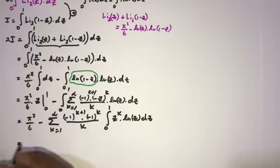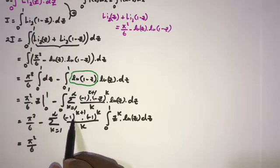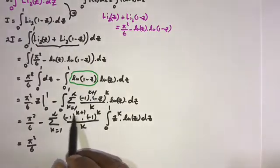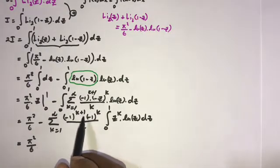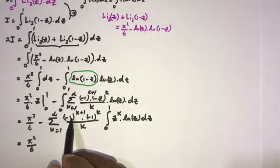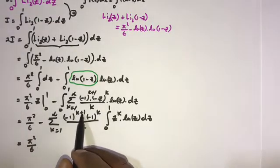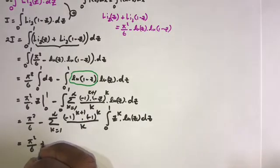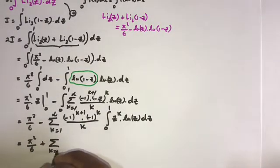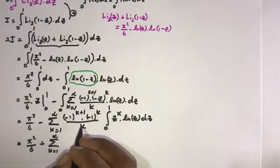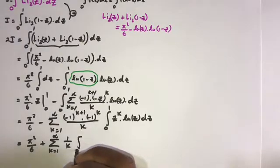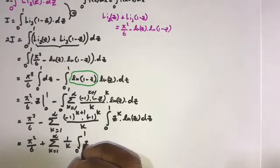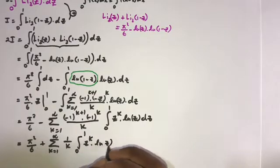Now, (minus 1)^(k+1) times (minus 1)^k gives (minus 1)^(2k), which is always even and therefore always positive. Then (minus 1)^1 gives a minus sign, so overall we have π²/6 minus the sum from k equals 1 to infinity of (1/k) times the integral from 0 to 1 of c^k times ln(c) dc.